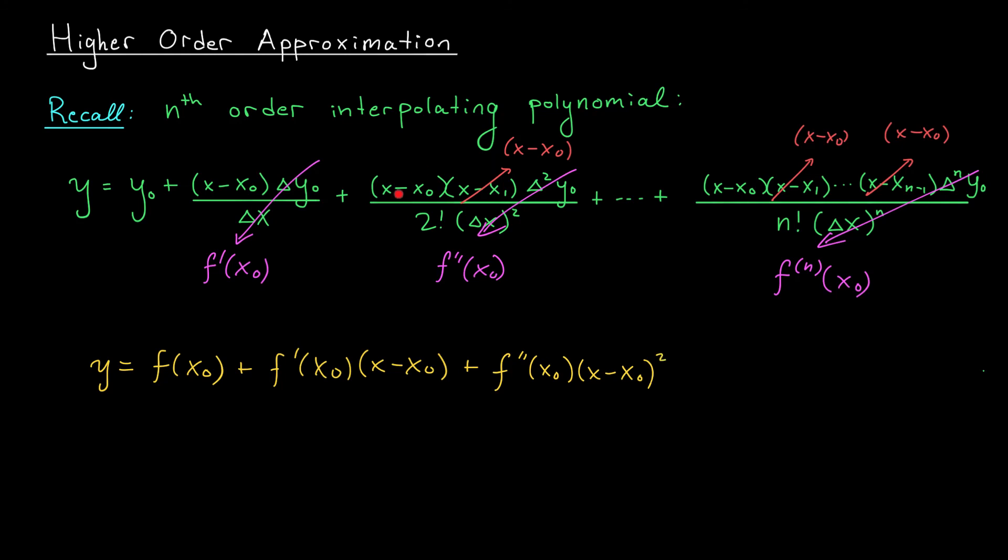squared, right? We have two (x - x_0) terms here, divided by two, and we continue. Our last term is going to be f⁽ⁿ⁾ at x_0, the nth derivative, times (x - x_0)ⁿ, divided by n factorial.